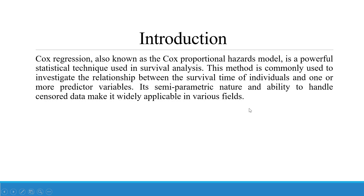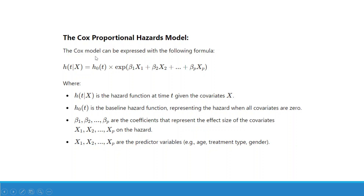The Cox proportional hazards model is given by the formula: h(t|x) = h₀(t) × exp(β₁x₁ + β₂x₂ + ... + βₚxₚ). Here, h(t|x) is the hazard function at time t given the covariates x. h₀(t) is the baseline hazard function representing the hazard when all covariates are zero. β₁, β₂, and βₚ are the coefficients representing the effect size of the covariates. x₁, x₂, xₚ are the predictor variables, which can be age, treatment type, or gender.